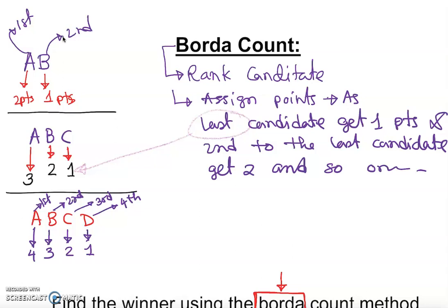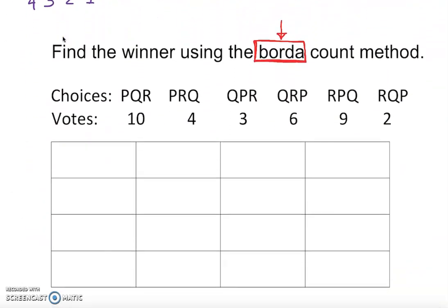Here is an example: find the winner using the Borda Count method. The choices are Peter, Quincy, and Robert, with six different voting possibilities. First, we assign points for them. I like to use this table structure so you don't misplace the numbers and points. So we have Peter, Quincy, Robert — and since there are only three candidates, we have first, second, and third positions.